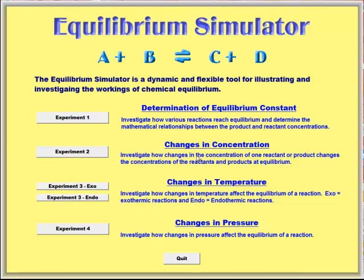Here are the four experiments that are provided. The first one is the determination of the equilibrium constant. The second is changes in concentration. The third, the exothermic and endothermic changes in temperature. And the fourth experiment, changes in pressure. Let's start with experiment one.